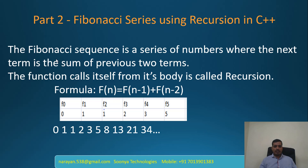What is Fibonacci series? The Fibonacci sequence is a series of numbers where each next term is the sum of the previous two terms. What is recursion? A function that calls itself from its body is called recursion. The formula to calculate the Fibonacci sequence is f(n) = f(n-1) + f(n-2). The default values for the Fibonacci sequence are 0 and 1.